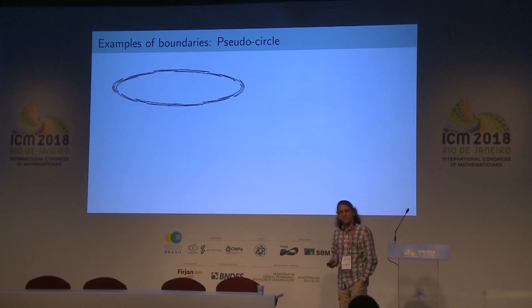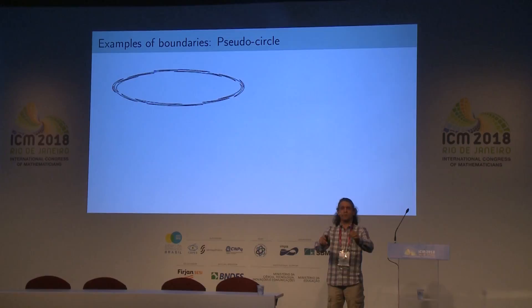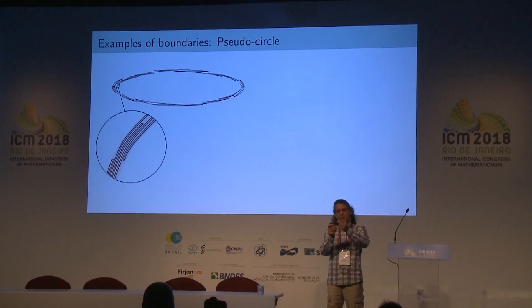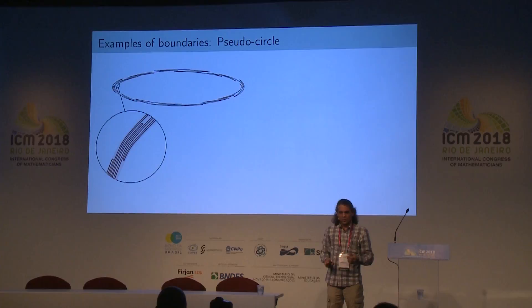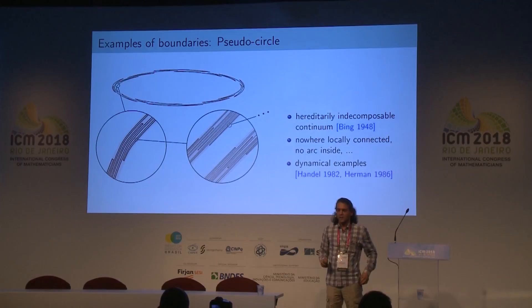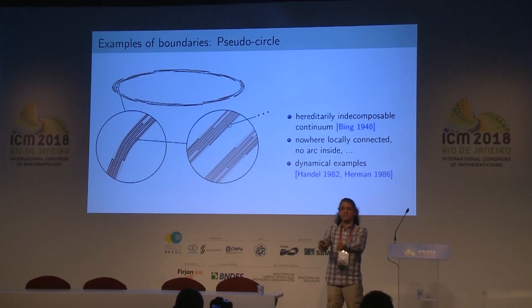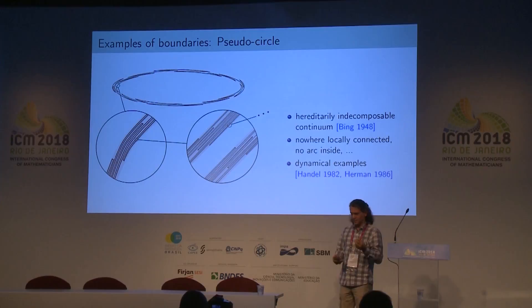A more drastic example is the pseudo-circle, which looks like a circle from far away, but when you zoom in you see crookedness — very weird twists in the topology. When you take a piece of it, you don't see a single connected component but infinitely many. If you keep zooming in, you see more and more crookedness. You end up with something that is nowhere locally connected and moreover doesn't even contain a continuous arc — any continuous map from an arc to this set must be constant. It's really topologically bad.